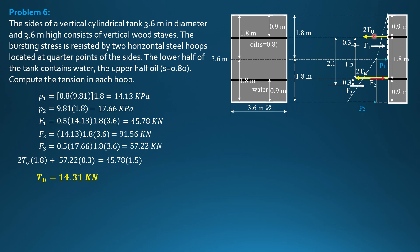Likewise, summation moment about this point, upper hoop equals zero. So 2 times tension in the upper hoop times 1.8 is equal to F1, 45.78 times 0.3 plus F2, 91.56 times 1.8 plus F3, 57.22 times 2.1. So that's the moment arm. And we can now compute tension in the bottom hoop equal to 82.97 kilonewtons.